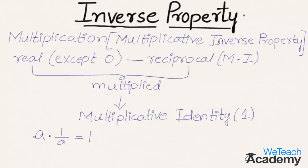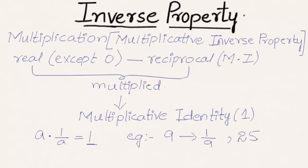In other words, when we multiply a number with its reciprocal they cancel out to get 1. For example, if the given number is 9 then the reciprocal of 9 will be 1/9, which is its multiplicative inverse. And if the given number is 25 then its multiplicative inverse will be 1/25.